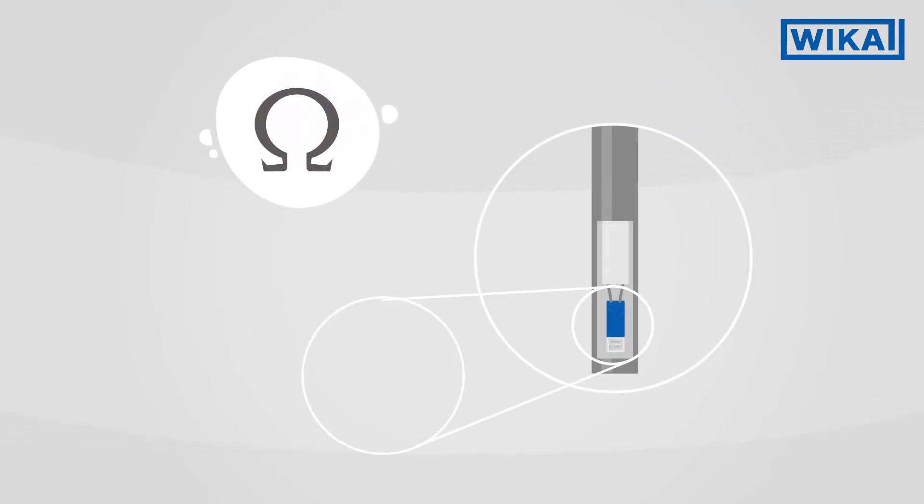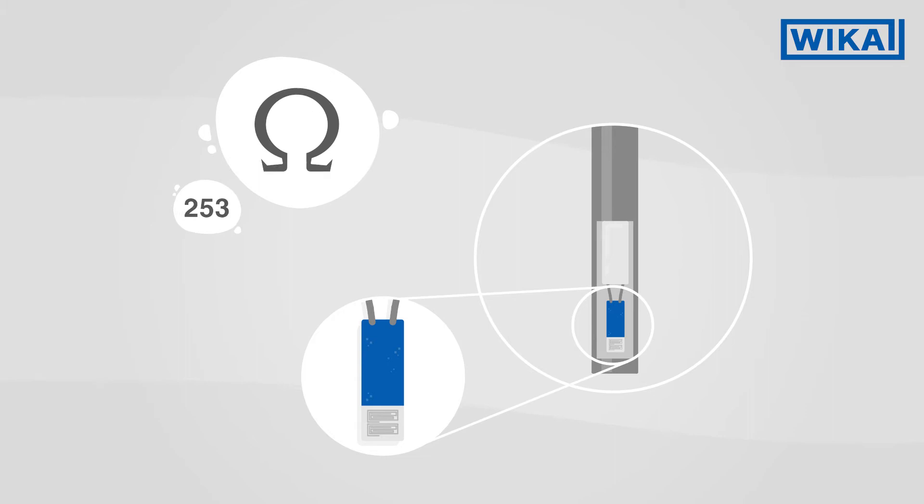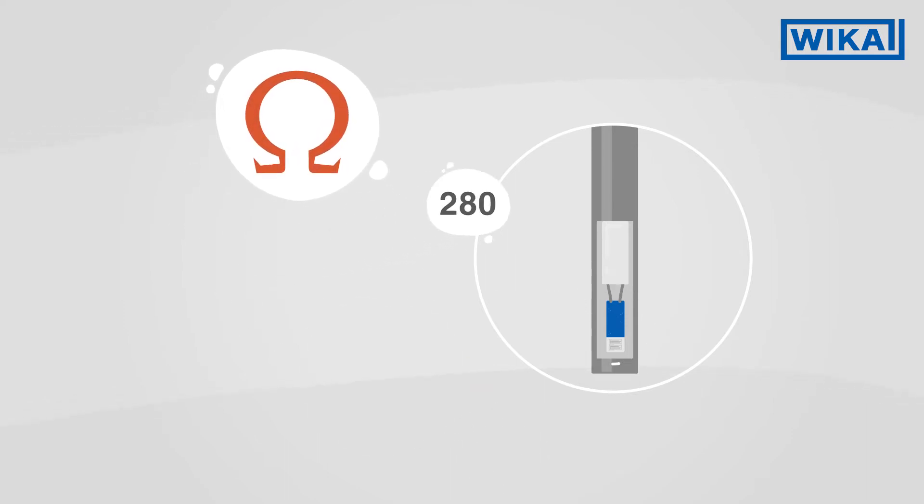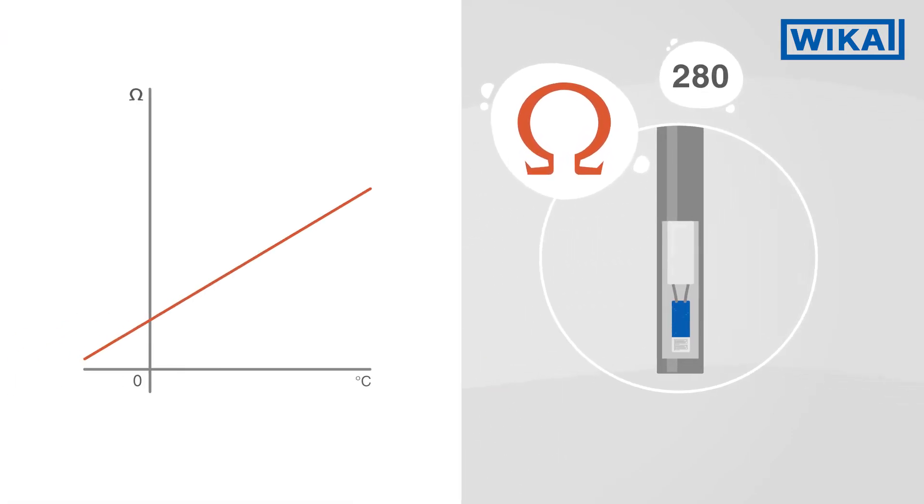The heart of a resistance thermometer is a platinum measuring resistor whose measured values are defined by standards. If the temperature changes, the electrical resistance in the sensor either decreases or increases following a precisely defined characteristic curve.